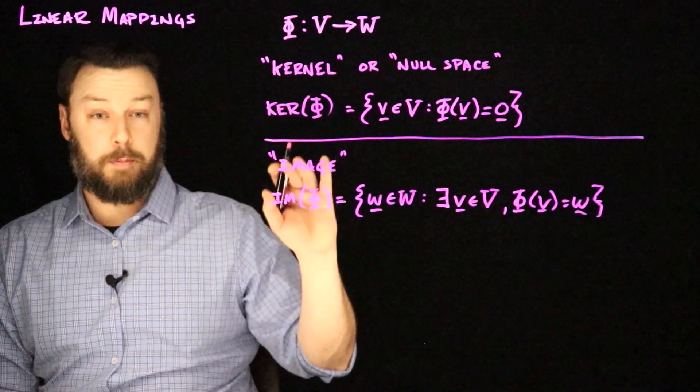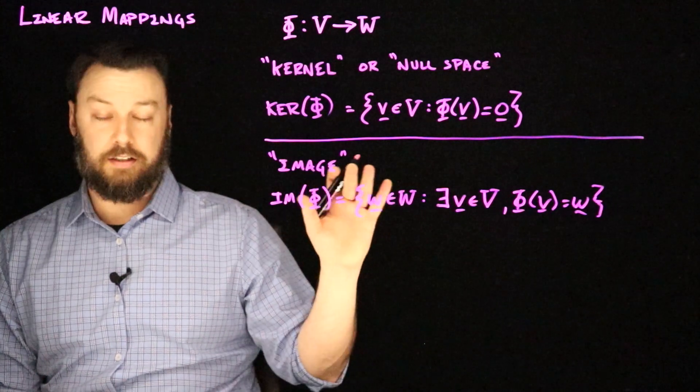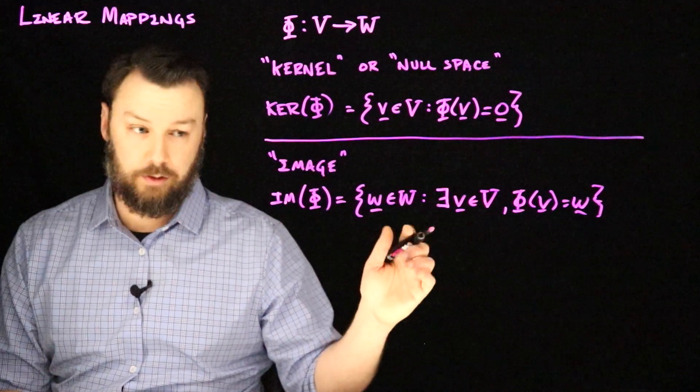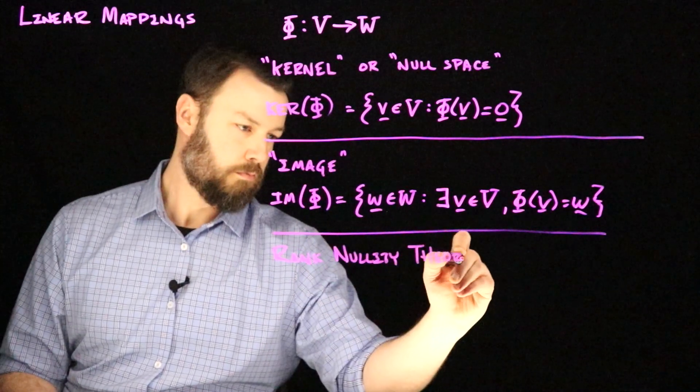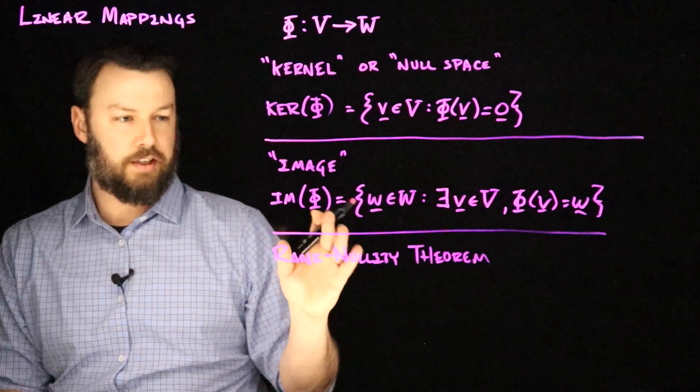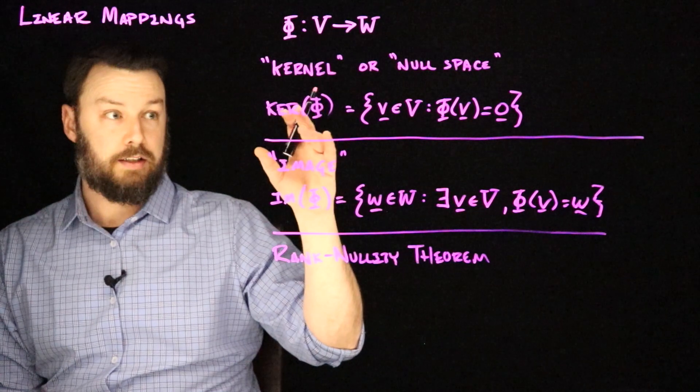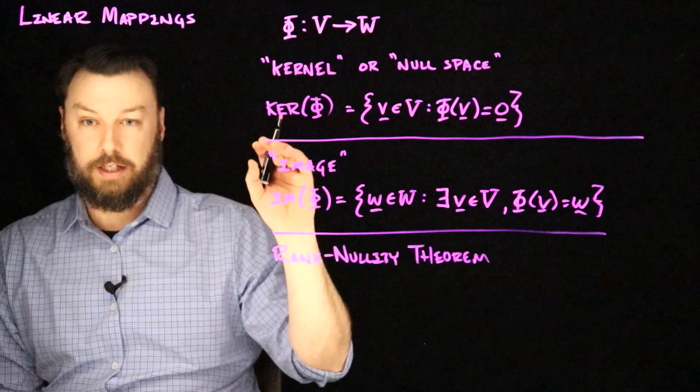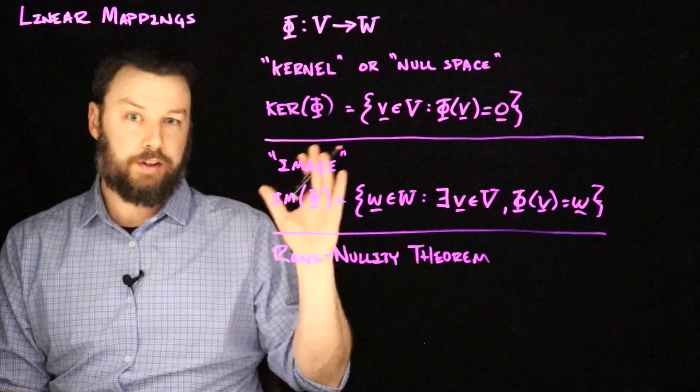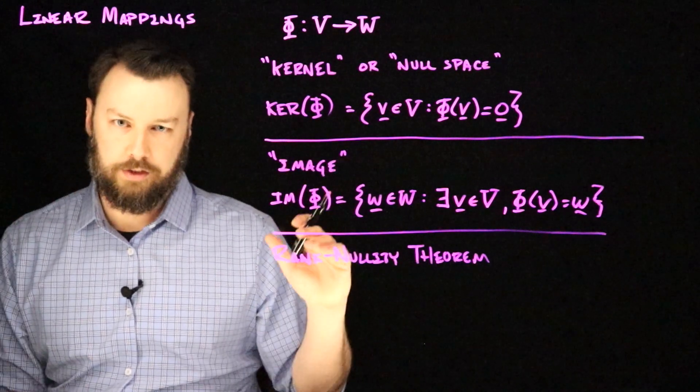So then we can think about the dimensions of each of these guys and get a thing that we call the rank nullity theorem. So the rank nullity theorem is essentially the idea that the dimensions associated with V are the sum of the dimensions of the kernel and of the image. That is that everything has to either go into the kernel or into the image.